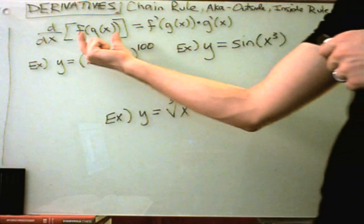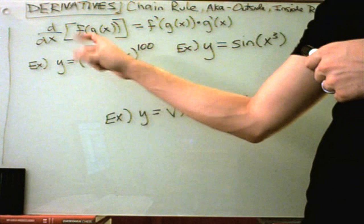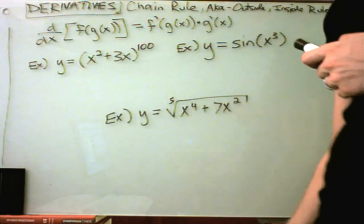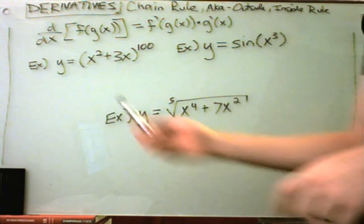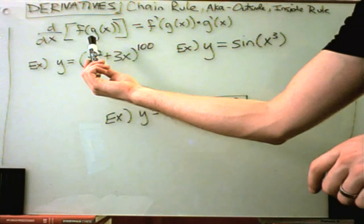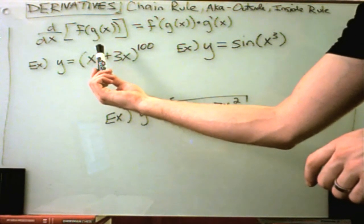The chain rule applies when you have a composition of functions. So f of g of x, and you're taking the derivative of that. Notice this is not a product, the f of g of x, it is a composition of functions.